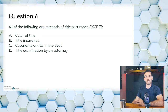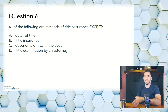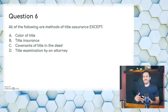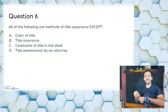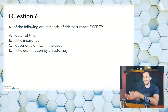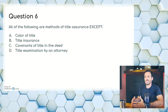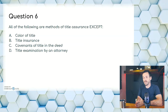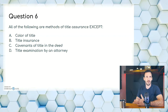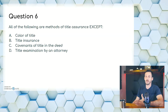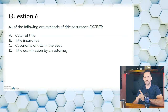Question six: all of the following are methods of title assurance except — A, color of title; B, title insurance; C, covenants of title in the deed; D, title examination by an attorney. As a buyer, attorneys are involved quite a bit through the transaction process here in North Carolina. Attorneys will have you sign a document covering title insurance, title examination, and covenants — which are certain guarantees the seller gives on the deed or title. We're left with A, color of title. I can't give you the definition here, but it's worth studying. Answer is A, color of title.